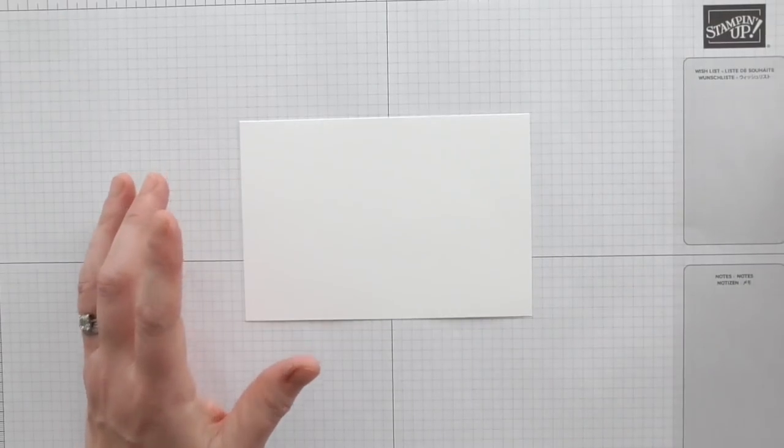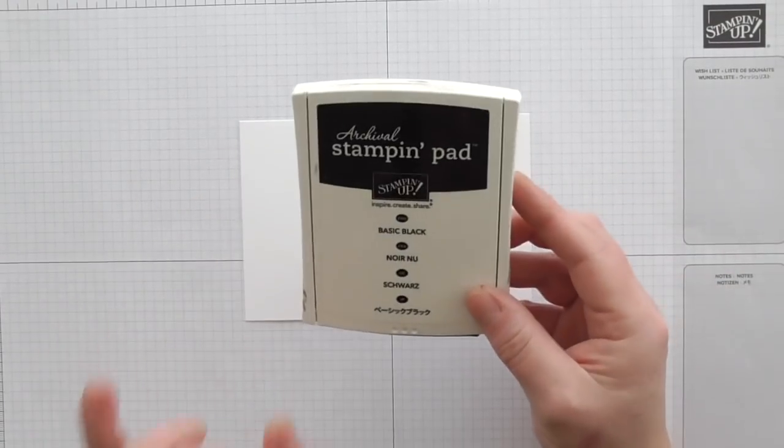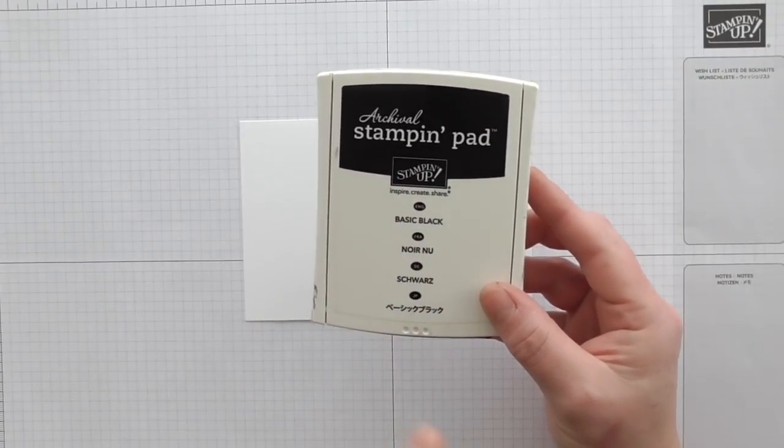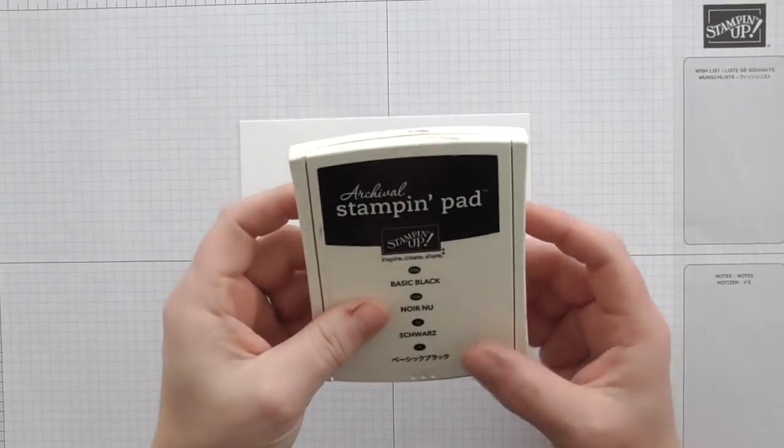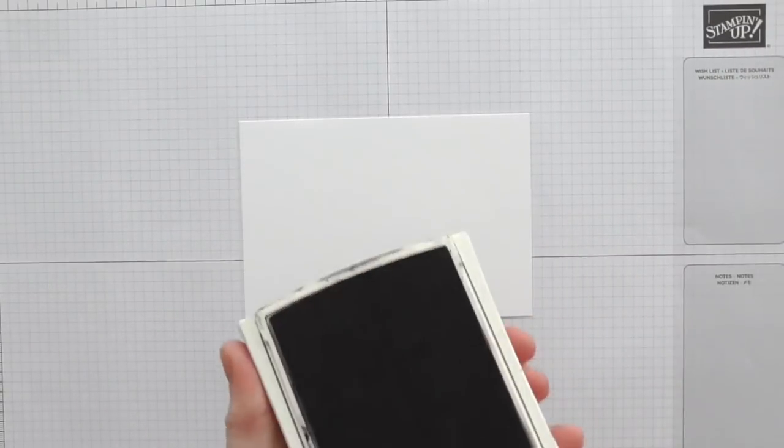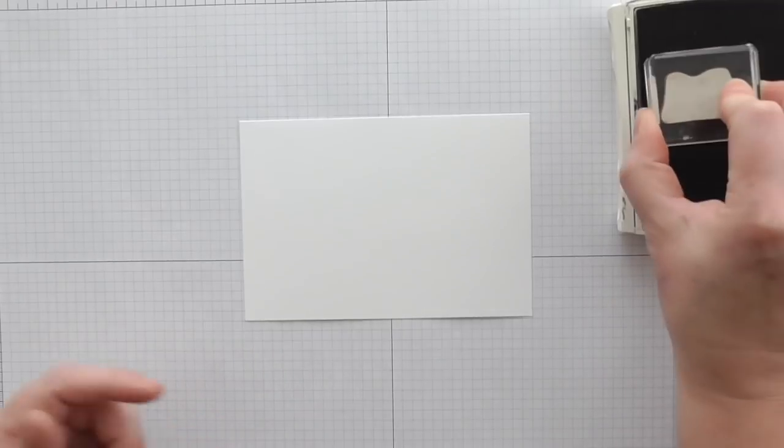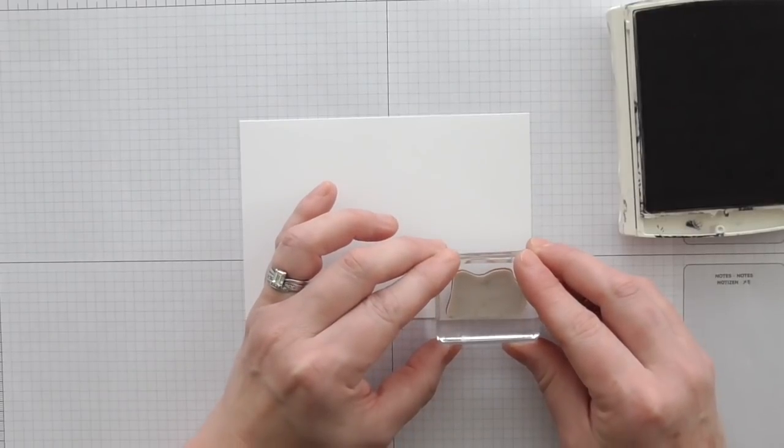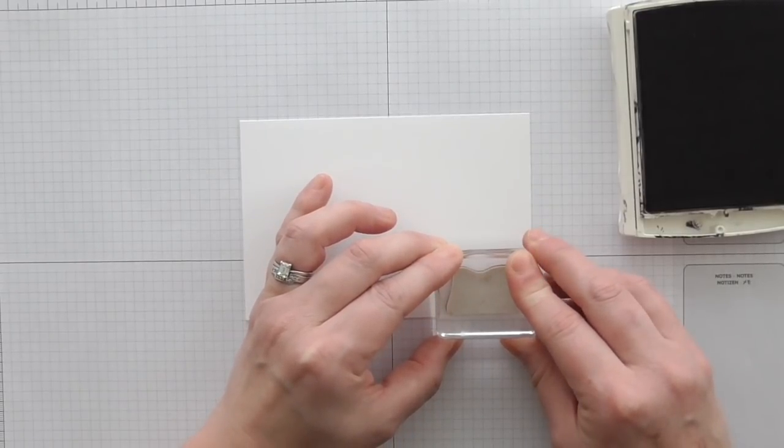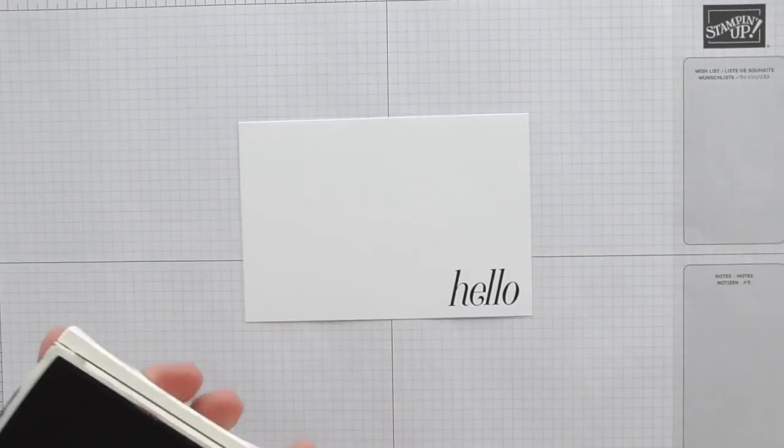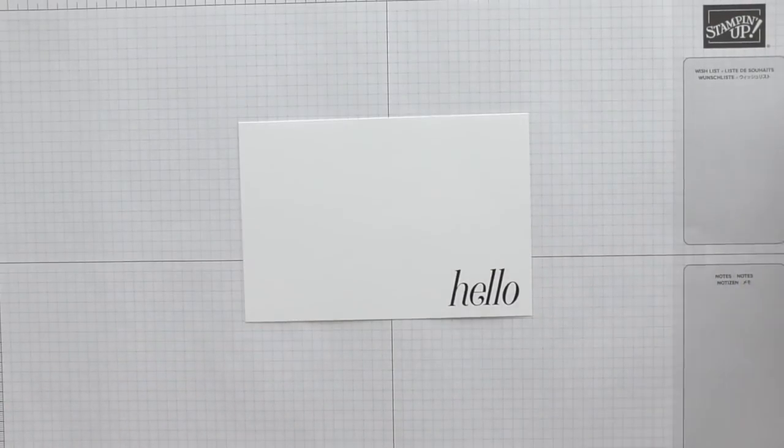So first of all we're just going to stamp a very simple sentiment. Now I'm using the archival basic black. This has retired, it's not available with Stampin' Up anymore. It's just my personal preference because it's a darker, more intense black. We do have other black inks that you can get hold of, or you can use the color to match the DSP as well. So I'm just going to stamp this hello in the bottom right corner and this is one of my favorite stamps and it comes from the Floral Frames set.